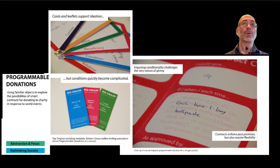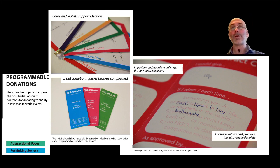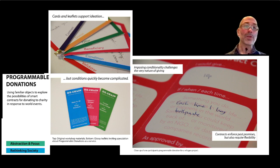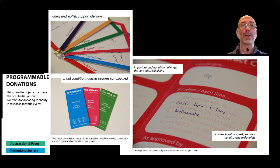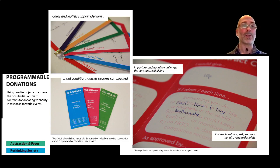These projects all get into ideas of what it is like to formalise ideas in code. Programmable Donations asked participants to design new ways of contingent charitable donations, such as giving money if certain events happen. This quickly raised the question of what kinds of limits should be placed on donations and what are acceptable rules and conditions.